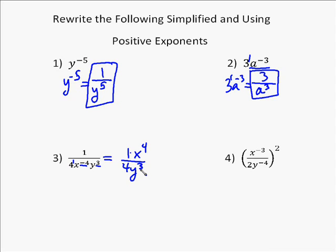So we end up with x to the fourth over 4y to the third, or 1x to the fourth. But we can get rid of the 1 and just get x to the fourth over 4y to the third. That's the correct solution.